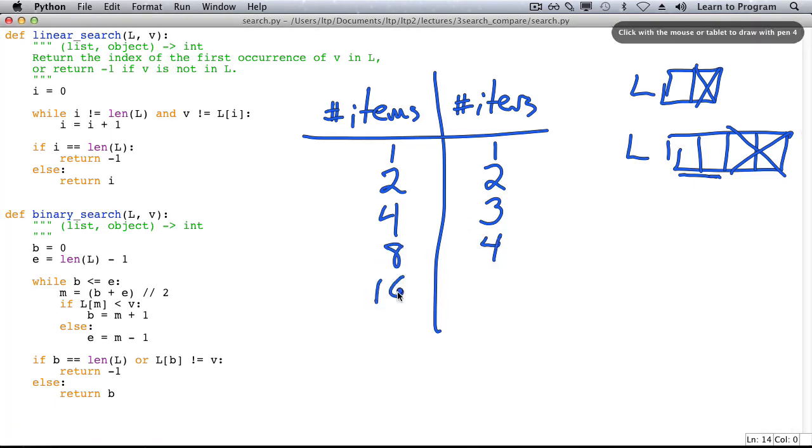Using this knowledge let's fill in a few more rows of the table. 8 is twice 4, 16 is twice 8, 32 is twice 16, 64 is twice 32, and 128. With 128 values we can find the index of V in this list in only eight iterations. Linear search would take 128.